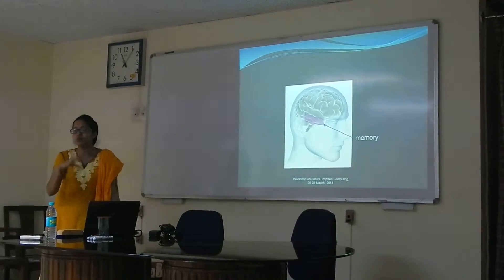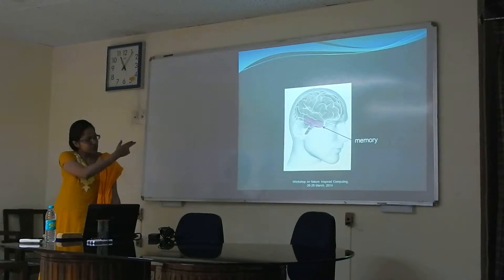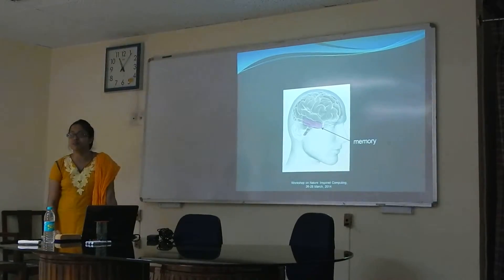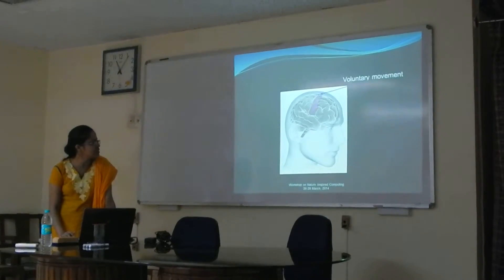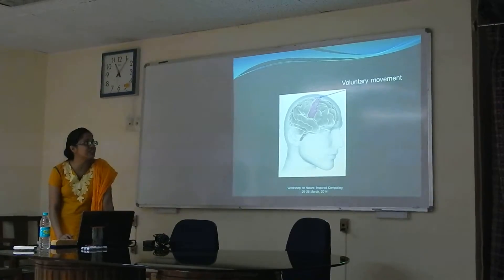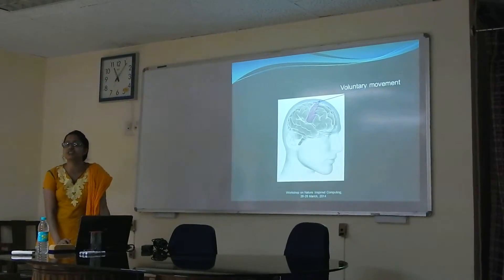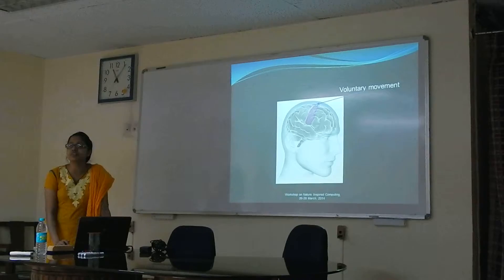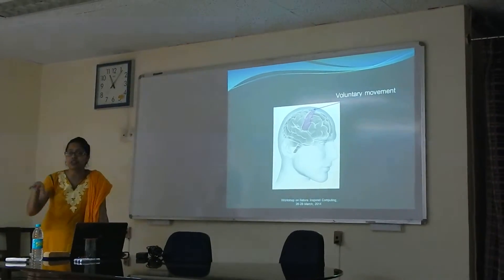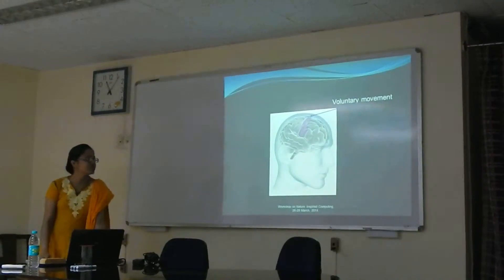A particular portion of the brain is devoted for memorization, so this portion is devoted mainly for memorization. And this portion is responsible for voluntary movement — it controls the movement of your motor neurons, or rather the motor muscles.